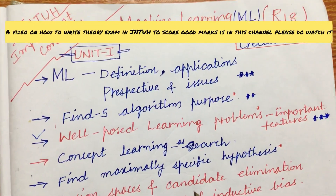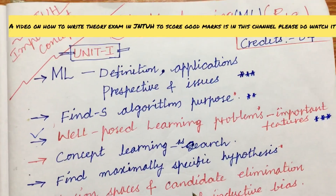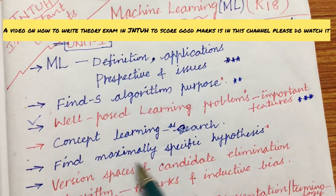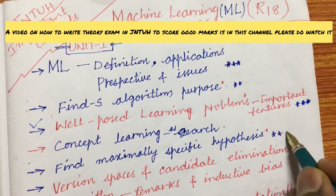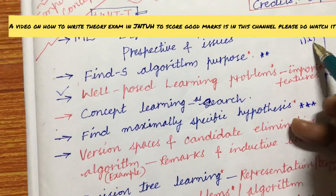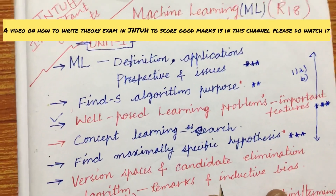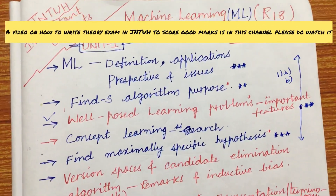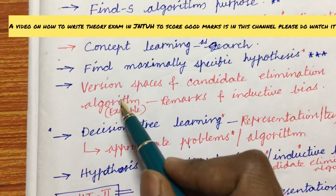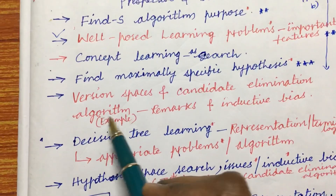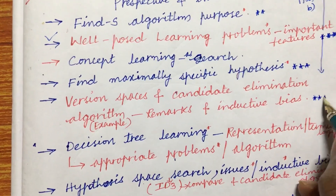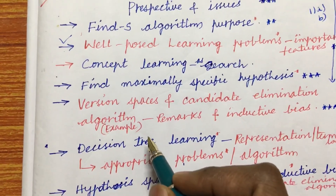Unit 1 covers concept learning as search — explain the term and find the maximally specific hypothesis, which is a very important question. You can expect one question from this part, either 1a or 1b. Do not expect a direct 15-mark question; you can expect an a-b or a-b-c combination. The second question is all about explaining version spaces and the candidate elimination algorithm, along with examples, remarks, and inductive bias. This is a gunshot question asked several times in previous year question papers.